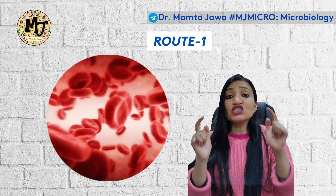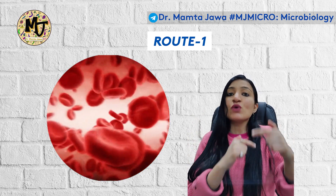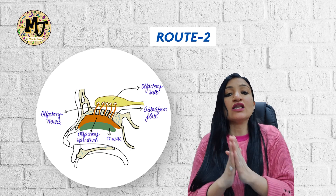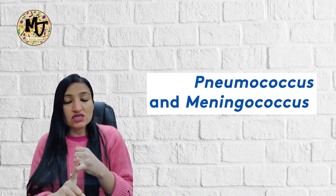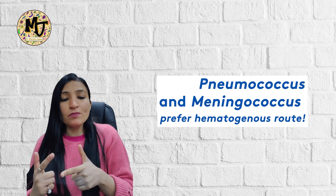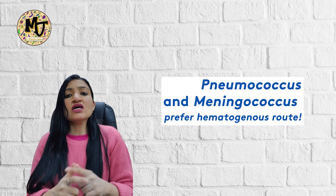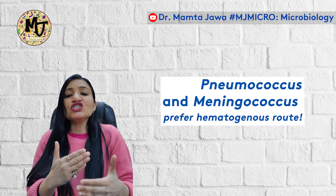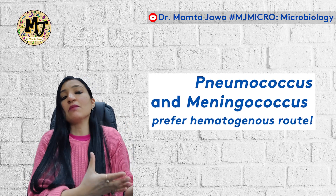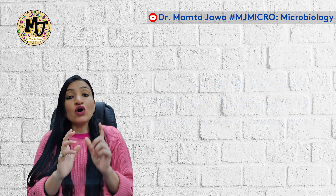Route number one is hematogenous — these organisms can simply jump into the bloodstream from the nasopharynx and swim their way to the CNS to cause meningitis. Route number two is through the cribriform plate, along the perineural sheath of the olfactory nerve. Among all three organisms, both cocci — Pneumococcus and Meningococcus — preferentially take route one, the hematogenous route, as compared to the cribriform route.